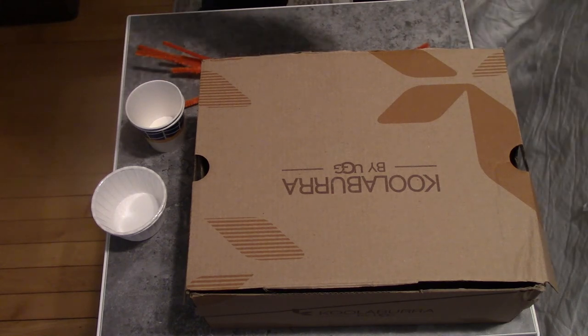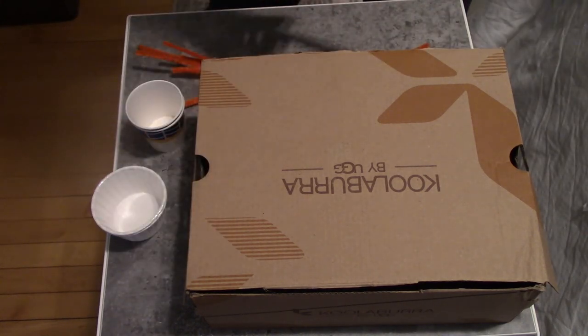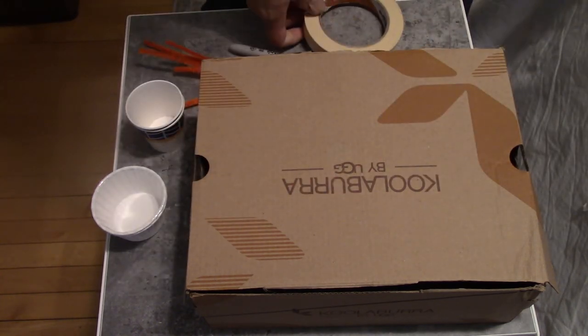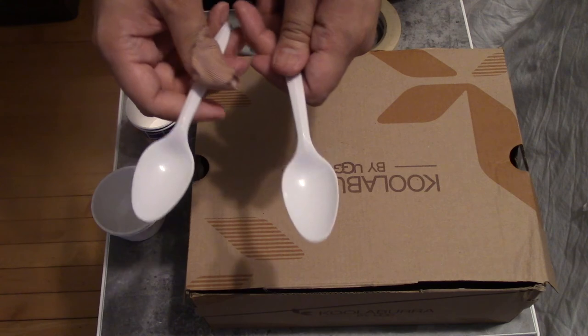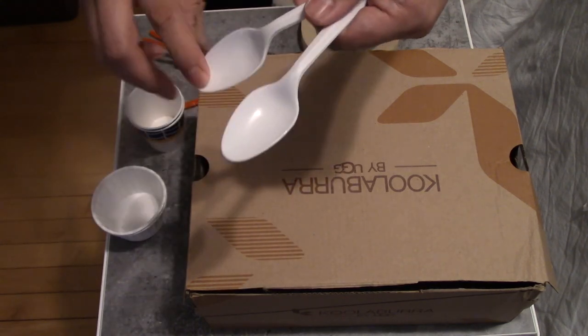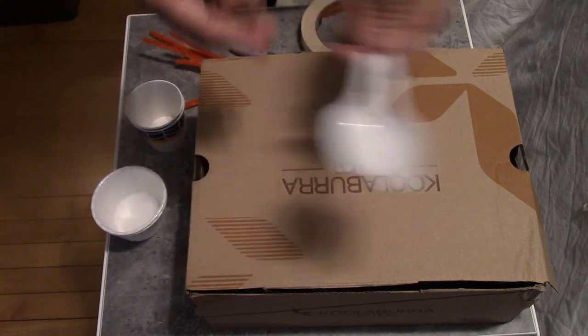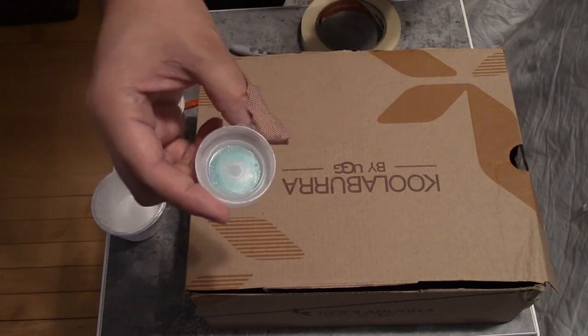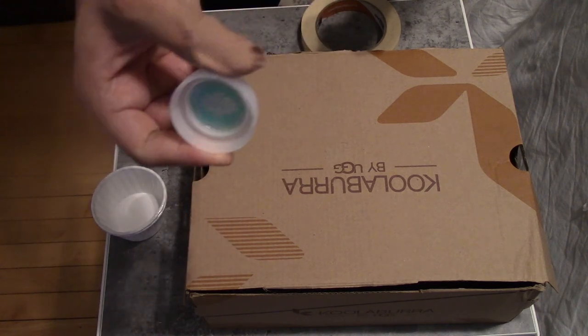Also going to need markers, some tape, a plastic spoon or fork. Spoons work really well because they can hold the object that you'll be launching towards the hoop. A bottle cap, preferably one that's larger size.